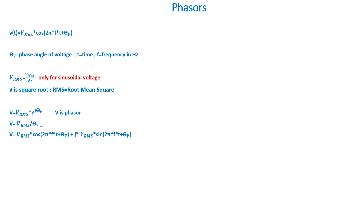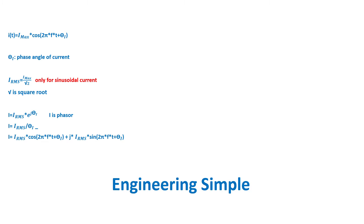Note that in AC circuits, the subscript RMS is usually dropped, so if you don't see RMS, assume it's RMS. We can do the same thing for current. If we have a sinusoidal current that changes with time, we can write it as the max value of the current times cosine(2πft + θ_i), where θ_i is the phase angle of the current.